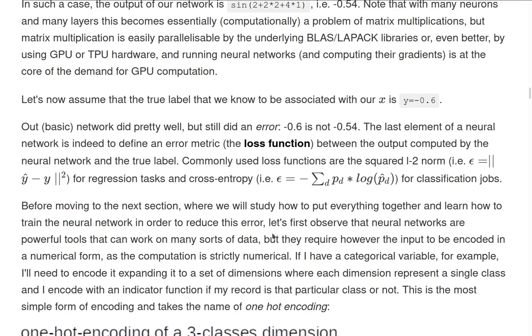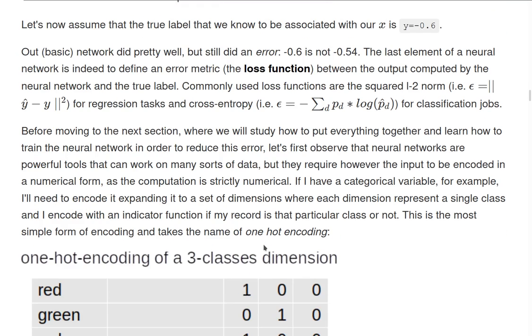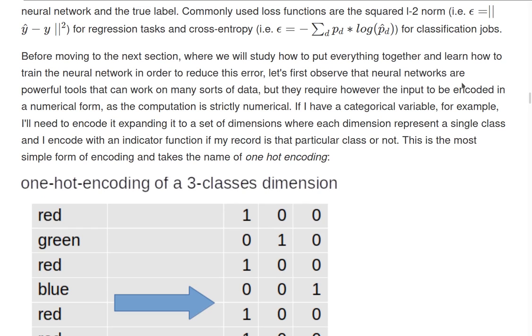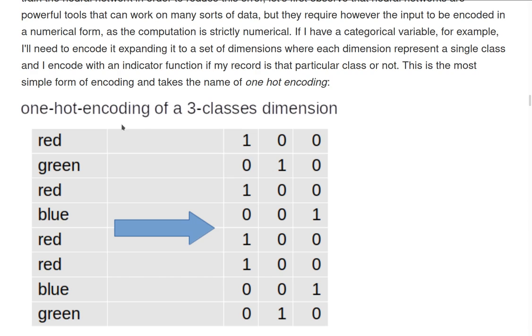So neural networks are very powerful tools that can work on many sorts of data. However, they require this data to first be encoded in a numerical form, as we see that the computation here is strictly numerical. So for example, if I have a categorical variable, I need to first encode it to a set of dimensions where each dimension represents a single class and I can encode it with an indicator function. Is my record of that particular class or not? This one that I described and that is represented in this figure here is the most simple form of encoding and takes the name of one-hot encoding.